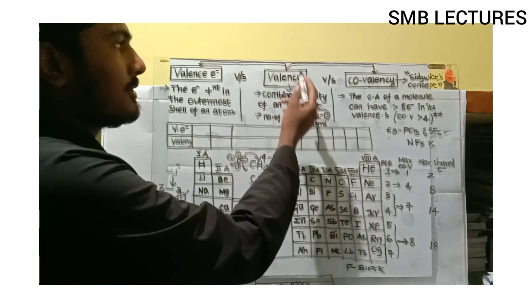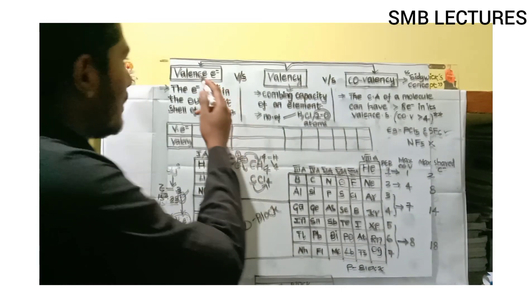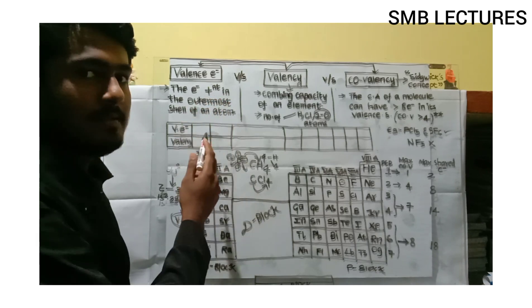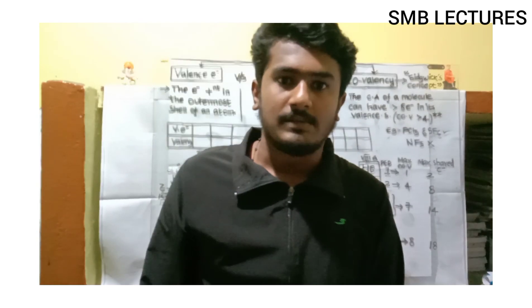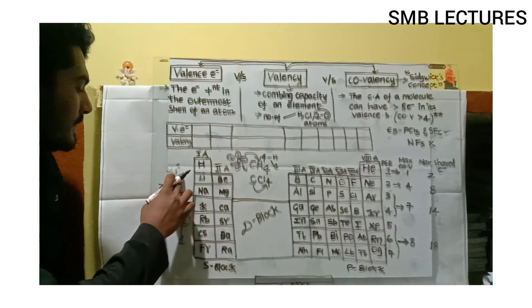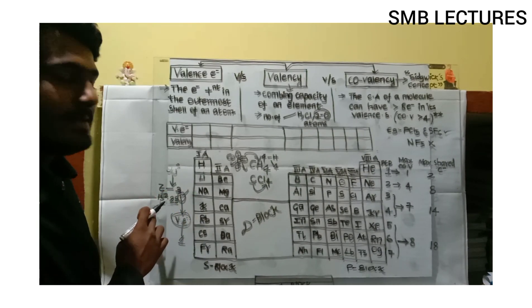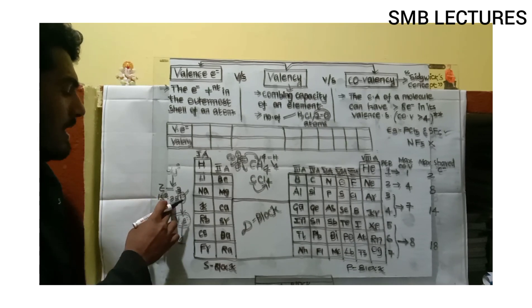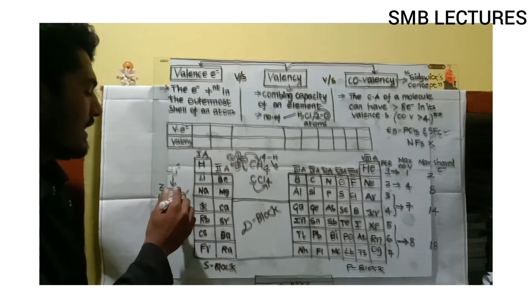First, what are valence electrons? The electrons which are present in the outermost shell of an atom are known as valence electrons. For example, let us take lithium. The atomic number of lithium is 3. When we write its electronic configuration: 1s² 2s¹, its outermost shell has one electron.